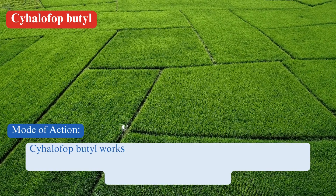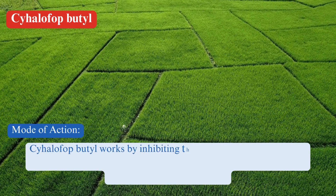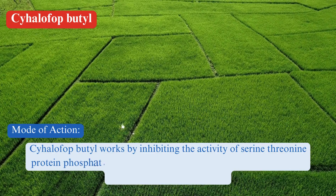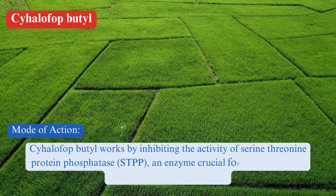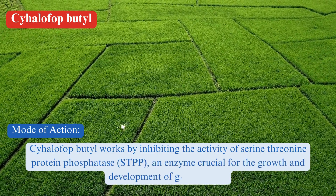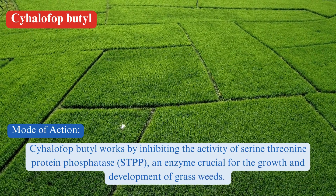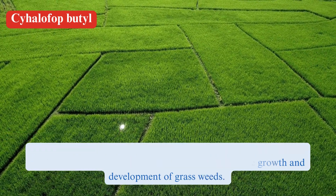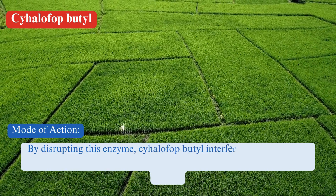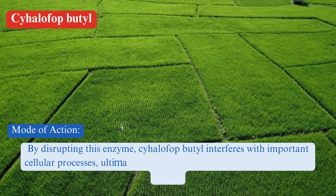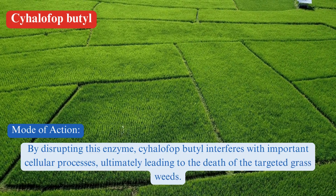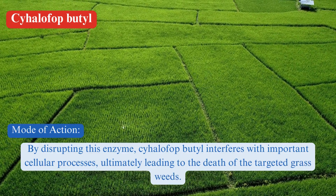Mode of action. Cyhalophop butyl works by inhibiting the activity of serine 3-9 protein phosphatase (STPP), an enzyme crucial for the growth and development of grassweeds. By disrupting this enzyme, Cyhalophop butyl interferes with important cellular processes, ultimately leading to the death of the targeted grassweeds.